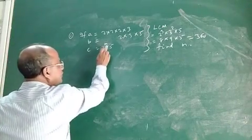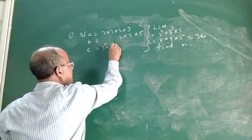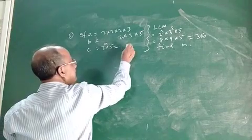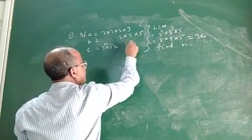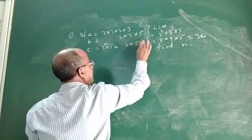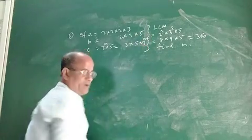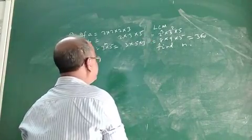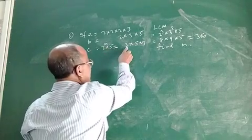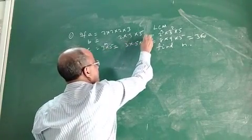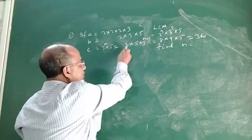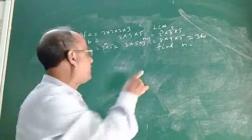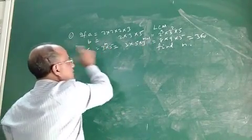The process is: we have C equal to 3 to the power N into 5. We can rewrite this as 3 into 5 into 3 to the power N minus 1. Why? Because 3 multiplied by 3 to the power N minus 1 gives you 3 to the power N.